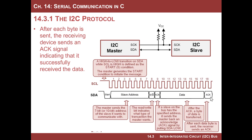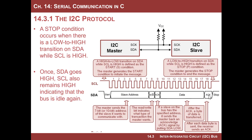An ACK is where the slave says it received the data and life is good. After the master is done sending data, it generates the stop condition — pulling both SCL and SDA high and leaving them there for multiple periods. It stops pulsing, and all slaves see no more pulses coming. When SDA goes high a little bit after the clock goes high, they know the message is done. That's the full packet.